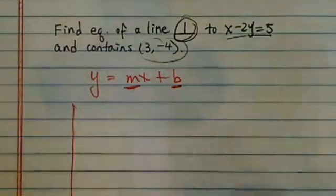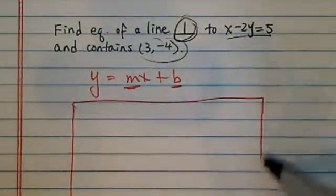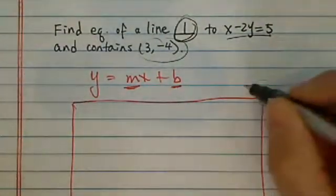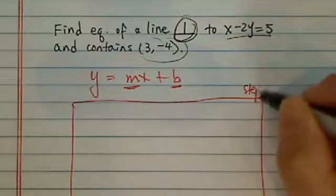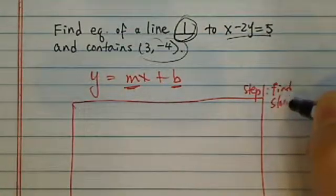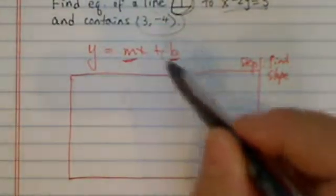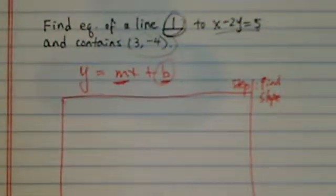So basically we have two steps. Step one: find slope. And then later on we're going to do step two, which is of course find the intercept. Let's take a look at how we do step one.